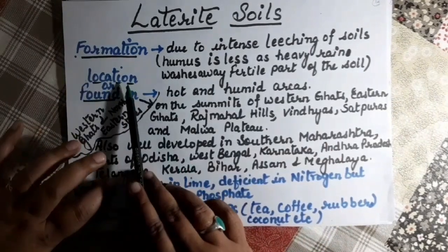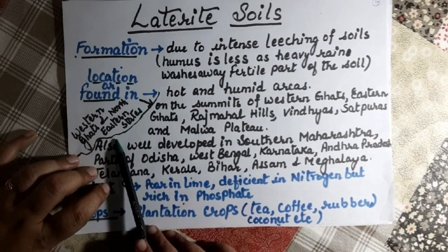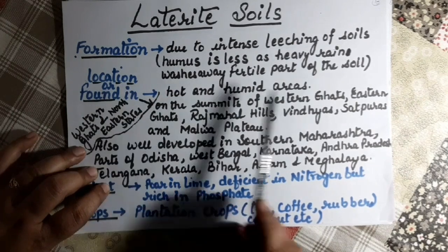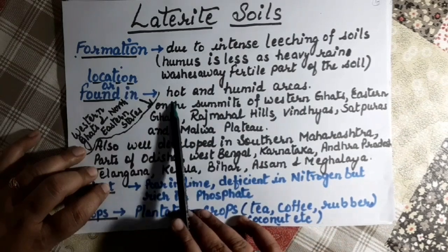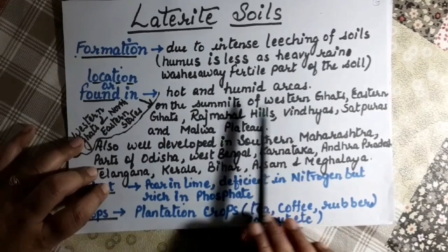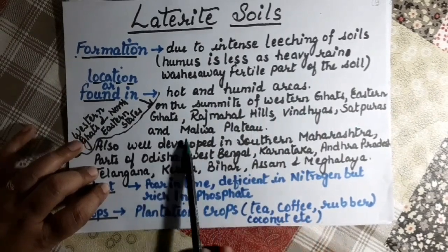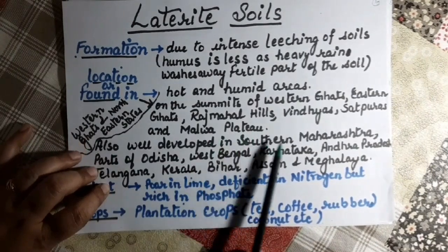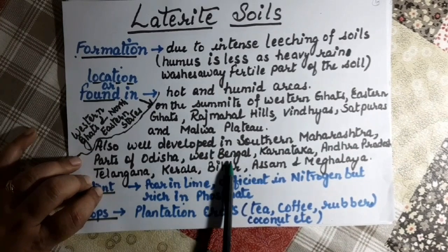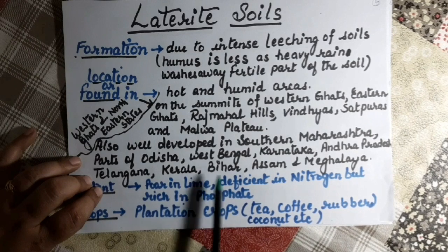Location of laterite soil: it is found in the eastern states — southern Maharashtra, parts of Odisha, West Bengal, Karnataka, Andhra Pradesh, Telangana, Kerala, Bihar, Assam, and Meghalaya.